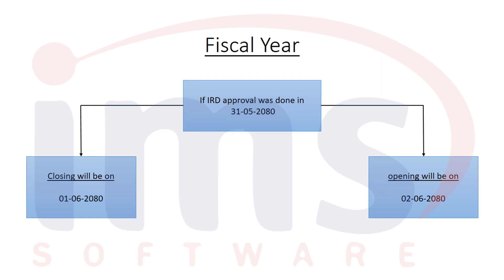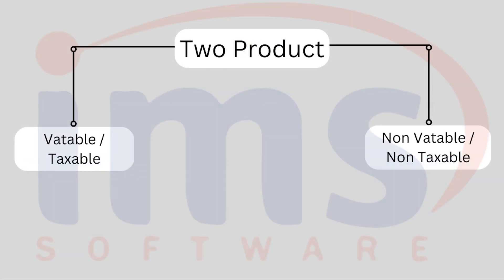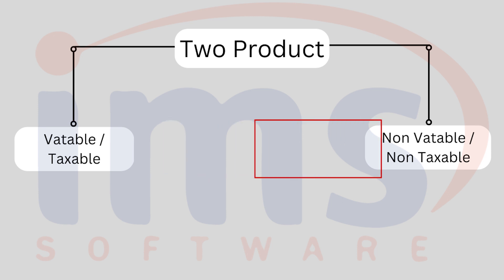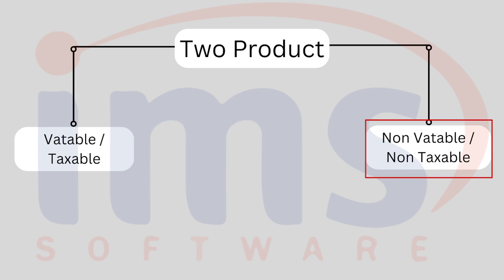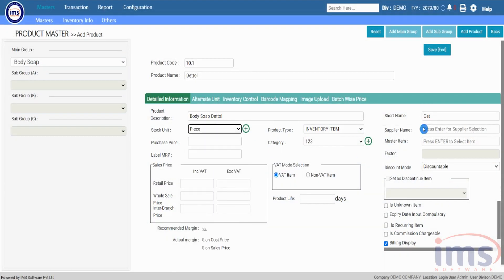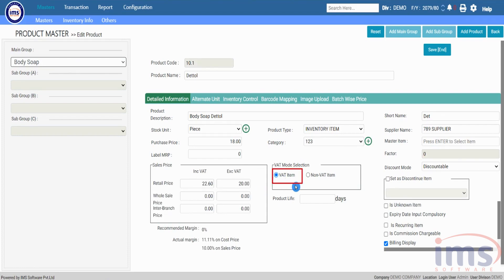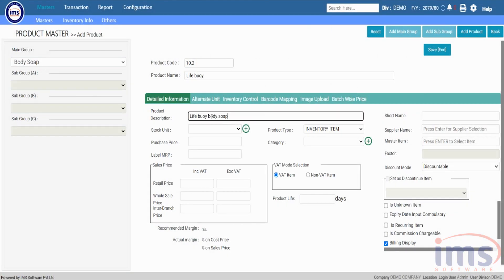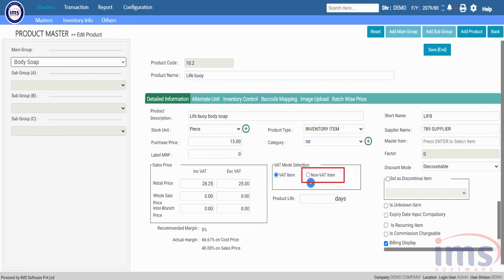Let's create two products. The first is VAT-able or taxable, because 13% VAT is added to the actual retail price of the item. The second is non-VAT-able or non-taxable, reflecting the actual retail price without VAT. Mark the first item as a VAT item and save it, then mark the second as a non-VAT item and save it.